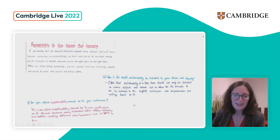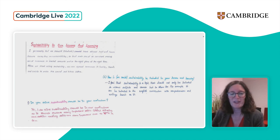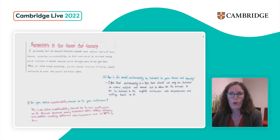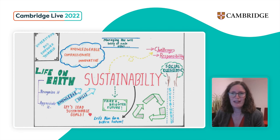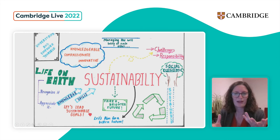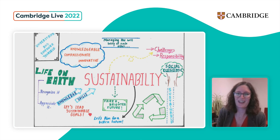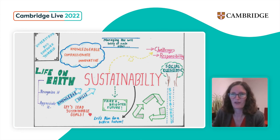Another learner said: 'Yes, I do think sustainability should be in our curriculum as it teaches students many important skills. Critical thinking and decision making skills are some important ones to name a few.' That's really great because it's really reflective of what we see as part of sustainability — those core life skills such as critical thinking. And finally, one group produced a really lovely poster which I think just summarizes everything we've been talking about today: the different aspects of sustainability, what it means for us, what's important about it, and what it can lead to — things about a fairer and brighter future, let's aim for a better future, the managing of wellbeing of each other, compassion, innovation, knowledge and so on.